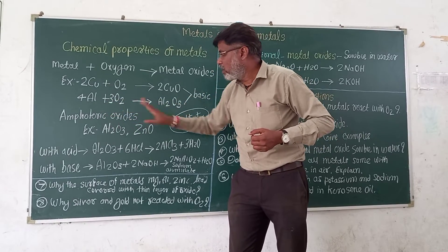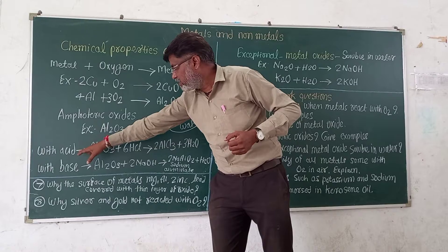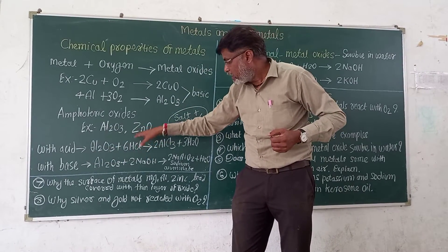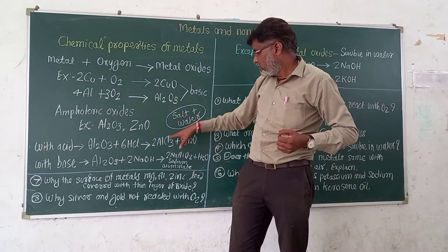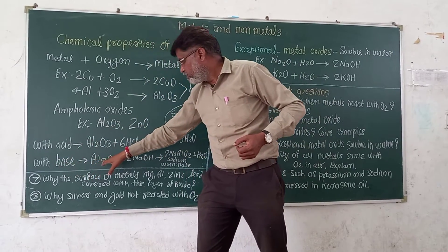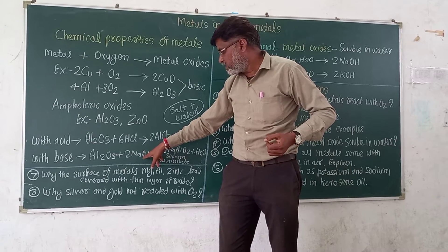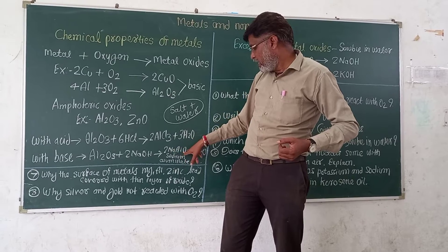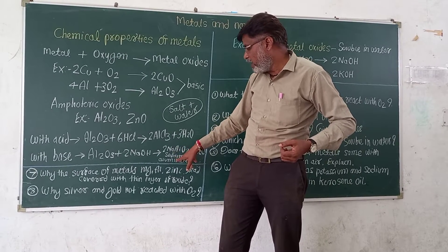These are called amphoteric oxides. When aluminium oxide reacts with hydrochloric acid, it forms aluminium chloride and water — that is, salt and water. And also with a base: when aluminium oxide reacts with sodium hydroxide, the result is the same — salt and water. The product is NaAlO2, which is sodium aluminate.